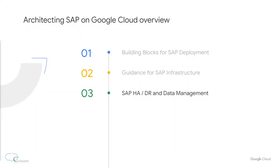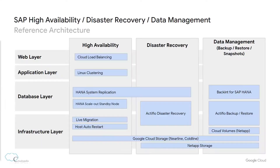We've covered the building blocks for SAP deployments and the guidance for infrastructure. Now let's see how to design high availability and disaster recovery for SAP deployments on GCP. This is a reference architecture with high availability and disaster recovery implementation — we will discuss it in detail.